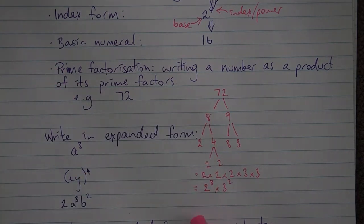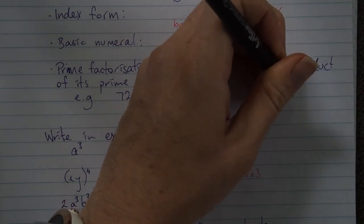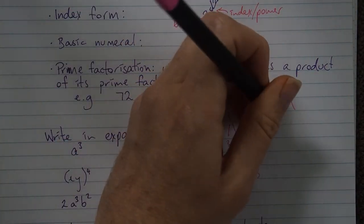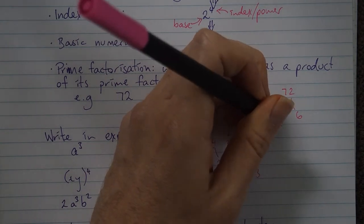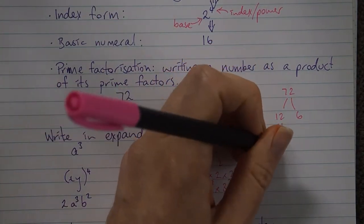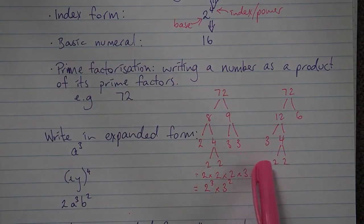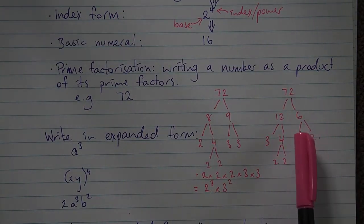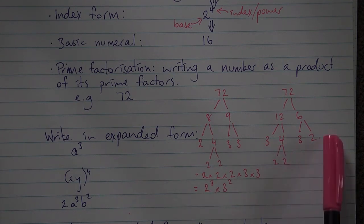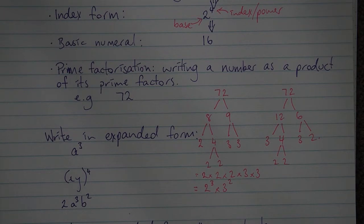We can't join those, so we still need our multiplication symbol between them. Now, if instead you chose 12 and 6 as your starting factors: 12 is not prime, so split it as 3 times 4; 3 is prime, 4 splits to 2 times 2. 6 is not prime, giving 3 times 2. That gives 3 times 2 times 2 times 3 times 2 — again, 2 to the power of 3 times 3 squared. So it doesn't matter what factors you choose; writing a number as a product of its prime factors will only ever have one solution.